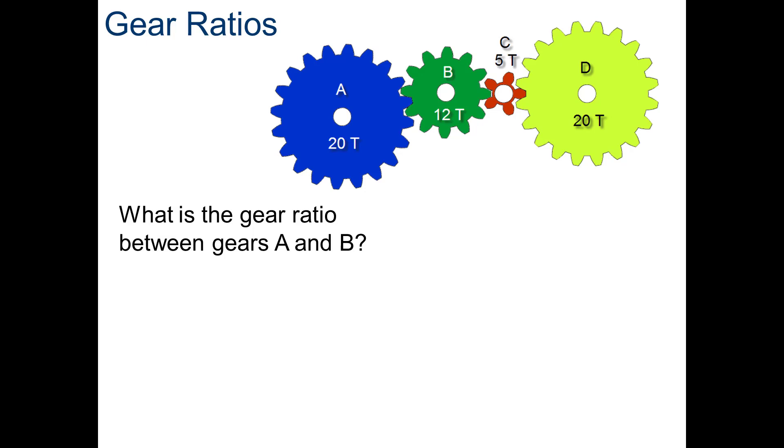So, if we look at this, I want you to take a second and pause the video and calculate the gear ratio between gears A and B. Okay, you should have gotten number of teeth out over number of teeth in, which is 12 out divided by 20 in, which would give you a gear ratio of 0.6.